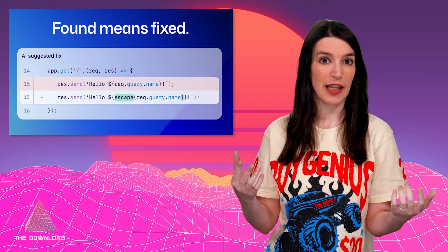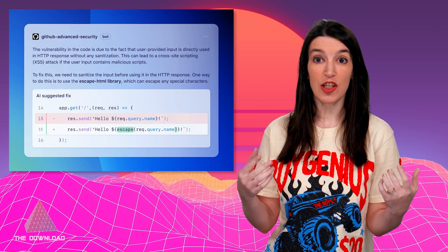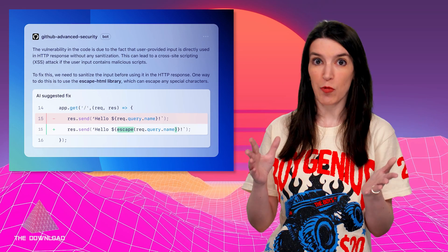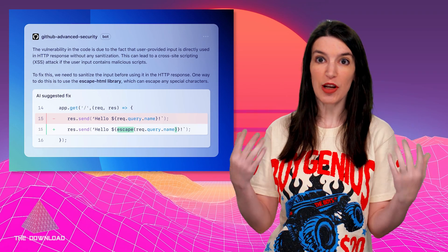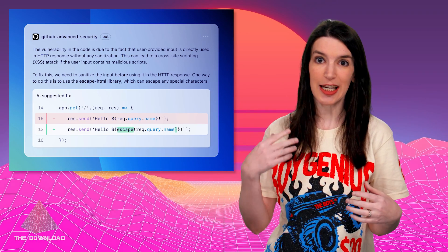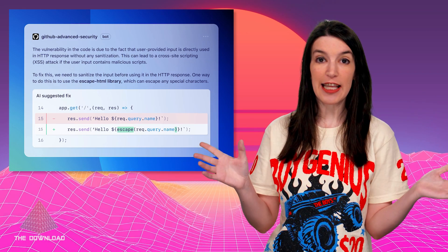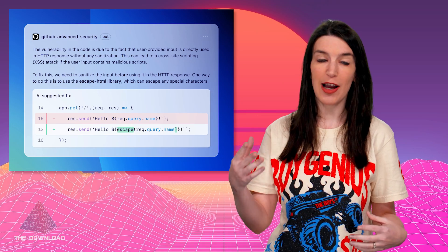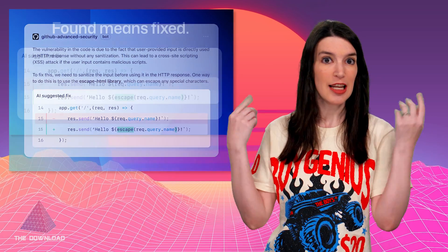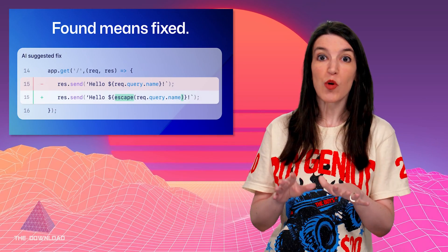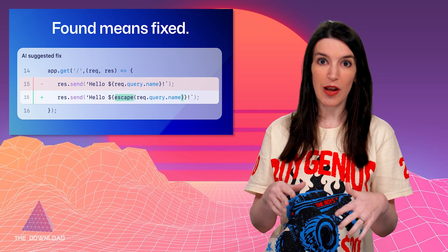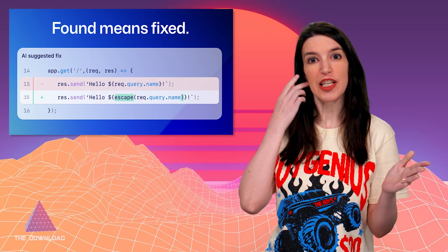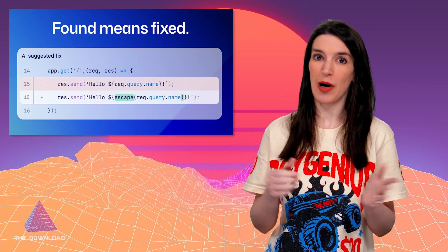The idea is that your code gets scanned, the vulnerability is found in a supported language, and you're going to get an alert and fix suggestions explained in natural language. Then you can preview the code suggestion and choose to edit, accept, or dismiss it, and commit those changes to your file. It can even go into multiple files and dependencies of your project. There are more details in the blog post linked below, as well as in the code documentation.